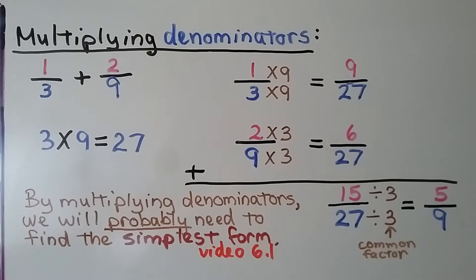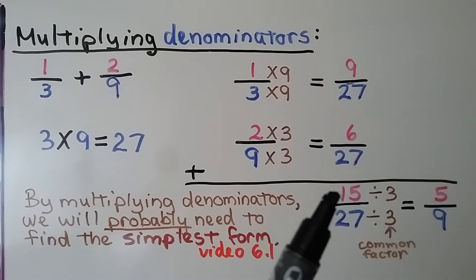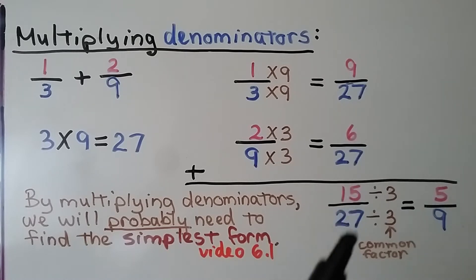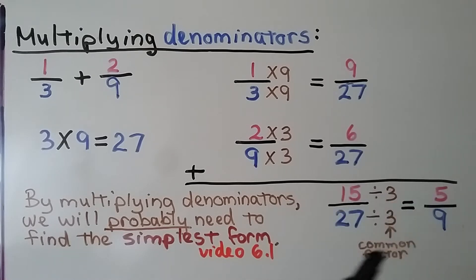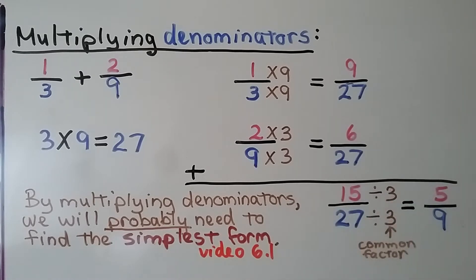We learned how to simplify in video 6.1, which is linked in the description. We find their greatest common factor — they share 3. 15 divided by 3 is 5, and 27 divided by 3 is 9. So 15 twenty-sevenths is equal to 5 ninths.